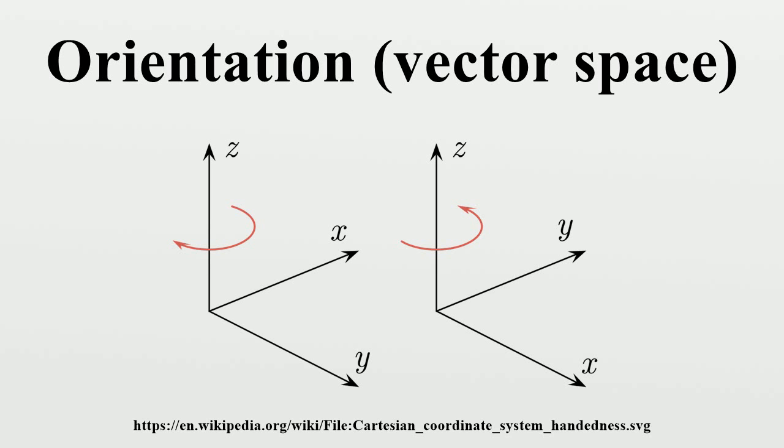Similarly, a bivector in three dimensions has an attitude given by the family of planes associated with it, an orientation indicating a choice of sense of traversal of its boundary, and a magnitude given by the area of the parallelogram defined by its two vectors.